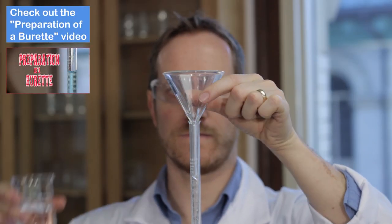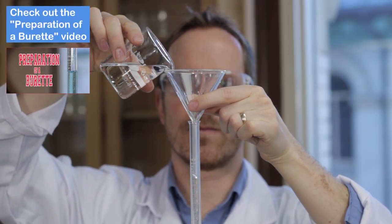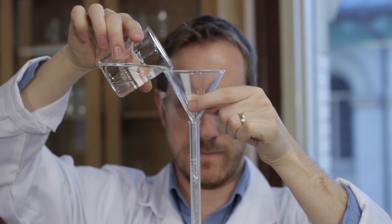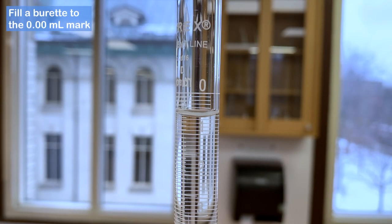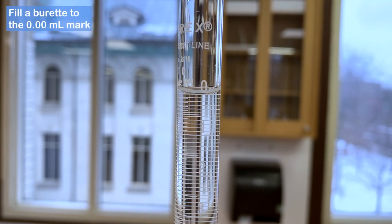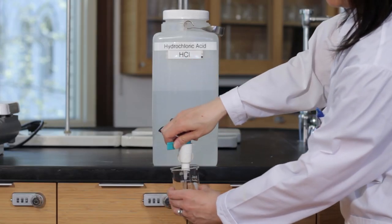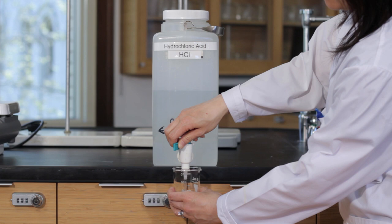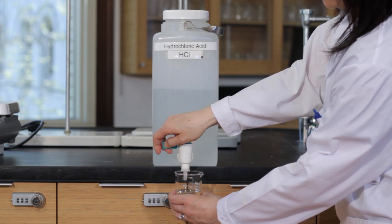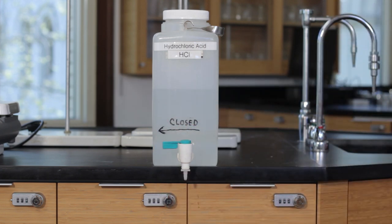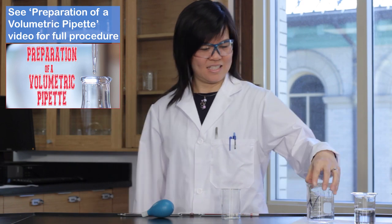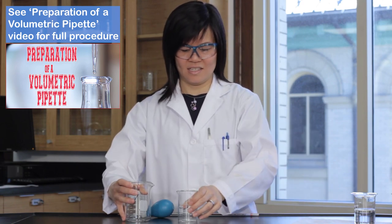Prepare the burette as demonstrated in another video. Transfer some of the hydrochloric acid from the main source into a clean, dry, medium-sized beaker. Prepare a 10 milliliter volumetric pipette as demonstrated in another video.